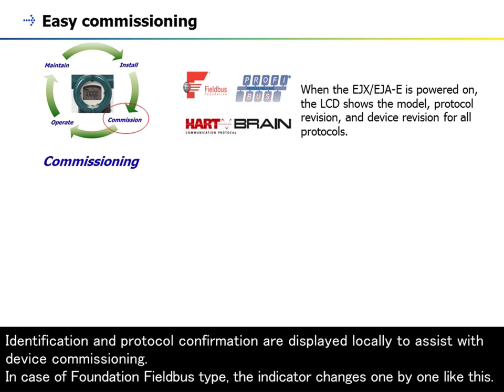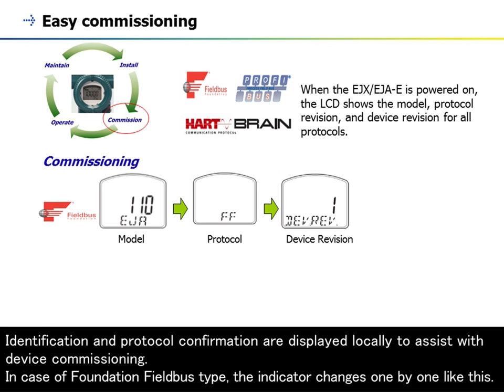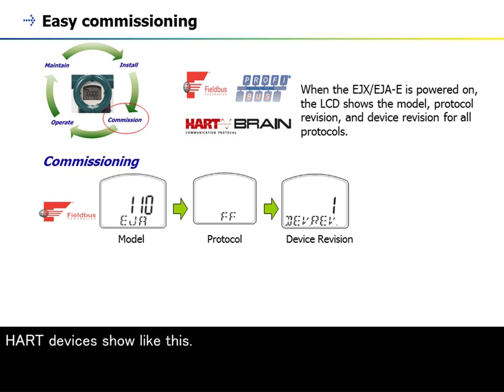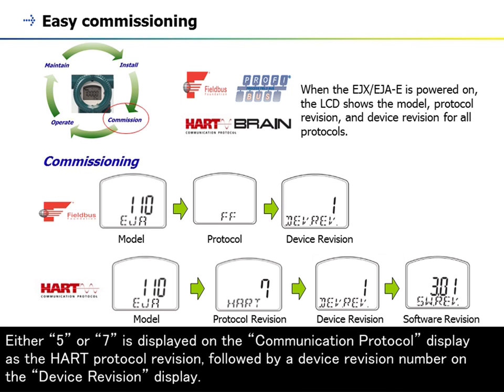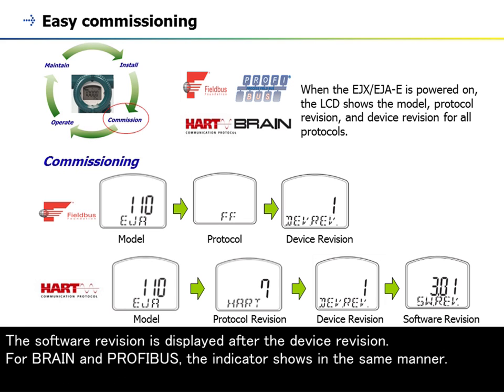Identification and protocol confirmation are displayed locally to assist with device commissioning. In the case of Foundation Fieldbus type, the indicator changes one by one. HART devices show either 5 or 7 on the communication protocol display as the HART protocol revision, followed by a device revision number and then the software revision. For BRAIN and PROFIBUS, the indicator shows in the same manner.